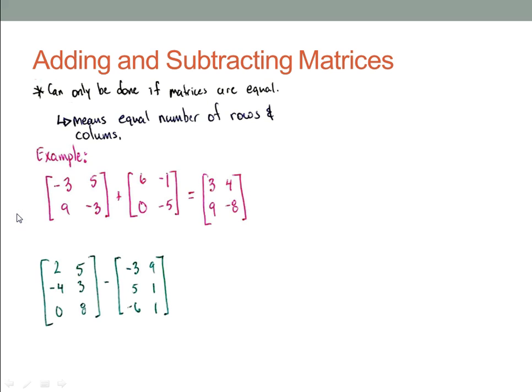All right, so the same thing that works with subtraction. And we see that we can check to see, again, we have three rows and two columns in the first matrix. And we also have three rows and two columns in the second matrix. So each element only subtracts the matching element in the second matrix. So 2 minus negative 3 is positive 5. 5 minus 9 is negative 4. Negative 4 minus 5 is equal to negative 9. 3 minus 1, of course, is 2.